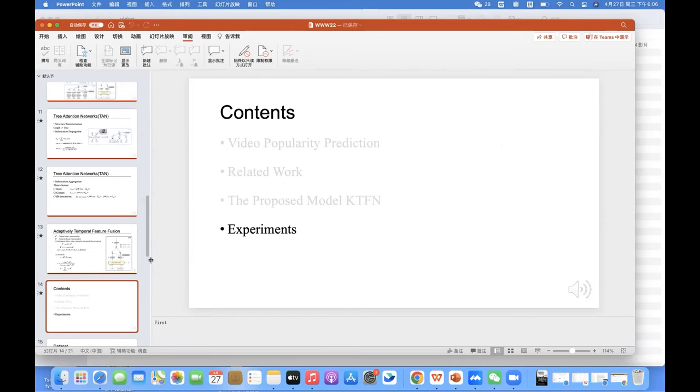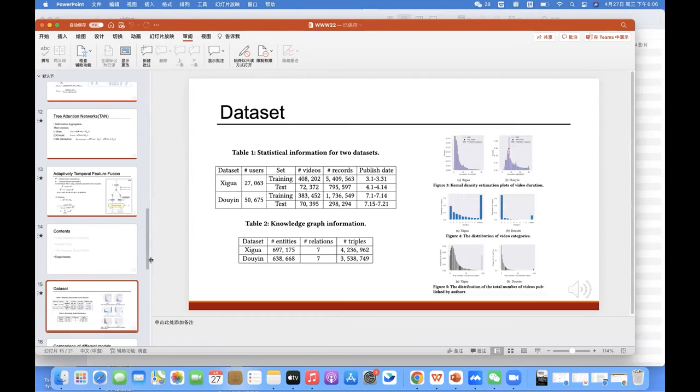Now, I will introduce the experiments. We collect a media video dataset and a micro video dataset from the server logs of XIGUA video and Douyin respectively. Both of them are online video sharing platforms run by ByteDance. On the left table shows the statistical information of the dataset. And the right figures show the distribution information of the dataset, including video duration, video categories, and distribution of total number of videos published by authors.